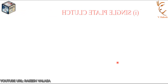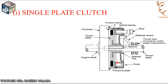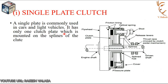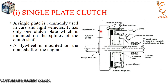The first one is the single plate clutch. This figure shows it consists of a flywheel, clutch plate, and pressure plate. The pressure plate is attached to the cover, and the cover is attached to the flywheel with the help of bolts and studs. This single plate has both ends with friction materials. A single plate clutch is commonly used in cars and light vehicles. It has only one clutch plate mounted on the splines of the clutch shaft, and a flywheel is mounted on the crankshaft of the engine.